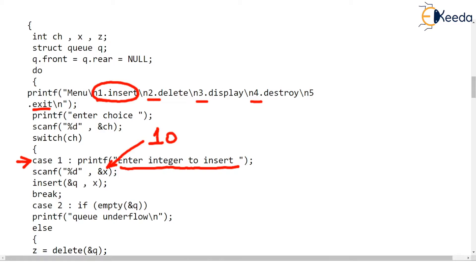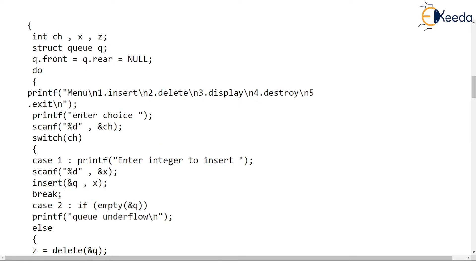Let's say the value entered by the user is 10, so the user wants 10 inserted into the queue. Main makes a call to insert. Observe the parameters passed to insert: we are passing the address of Q and the value 10 (because X is 10). I hope you are aware of what it means to pass the address of the queue — but that's the call to insert. So now we are ready to see how the insert function works.